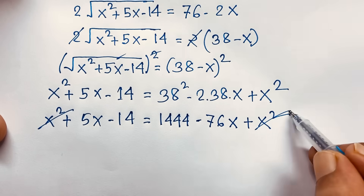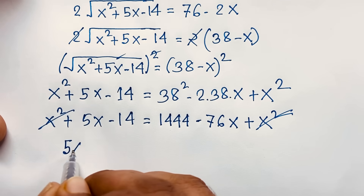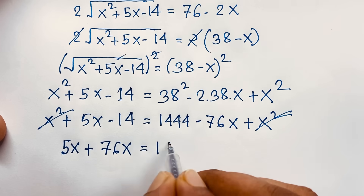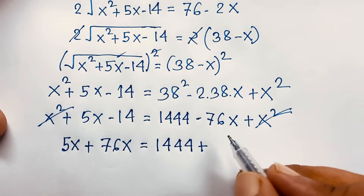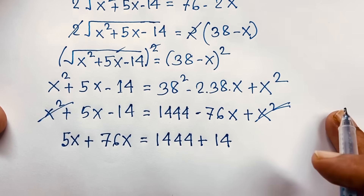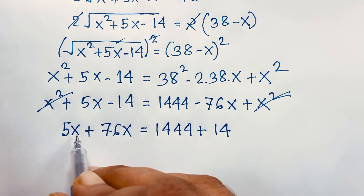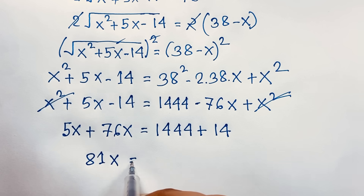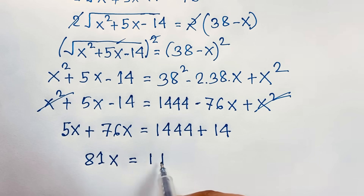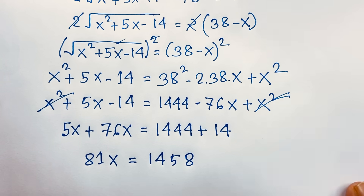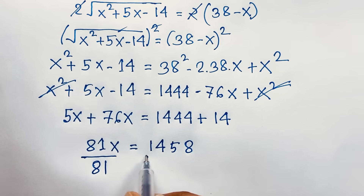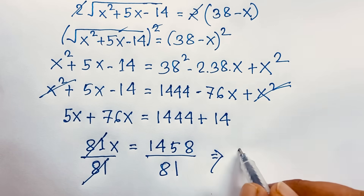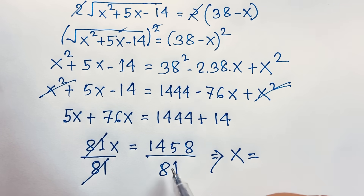Now both sides have x squared, so they cancel out. We have 5x on the left. Moving 76x to the right gives positive 76x, and moving negative 14 to the right gives positive 14. So 76x plus 5x equals 81x, and 1444 plus 14 equals 1458. So 81x equals 1458. Dividing both sides by 81, the 81 cancels out, and 1458 divided by 81 equals 18.